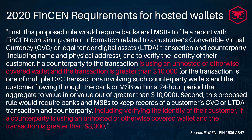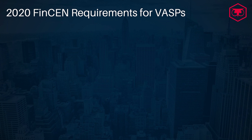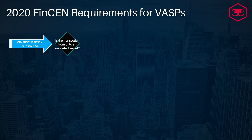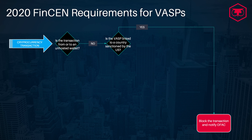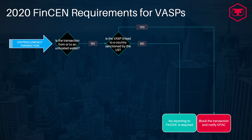This applies when the transaction is greater than $10,000, or when the transaction is one of multiple CVC transactions involving such counterparty wallets flowing through the bank or MSB within a 24-hour period that aggregates to a value greater than $10,000. Second, this proposed rule would require banks and MSBs to keep records of a customer's CVC or LTDA transaction and counterparty, including verifying the identity of the customer if a counterparty is using an unhosted or otherwise covered wallet and the transaction is greater than $3,000.